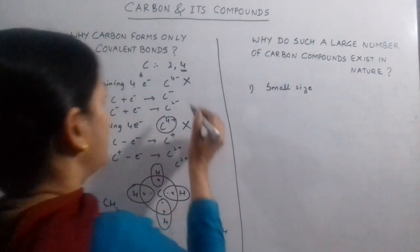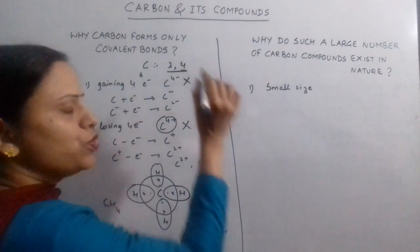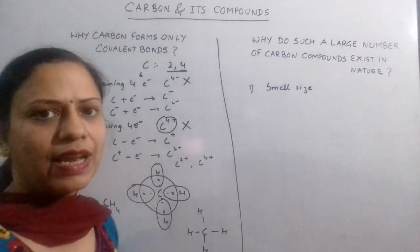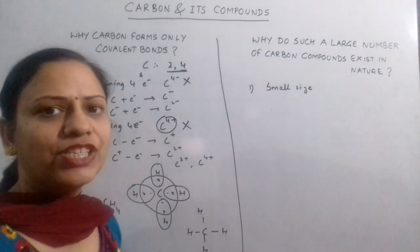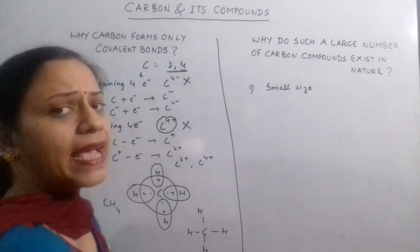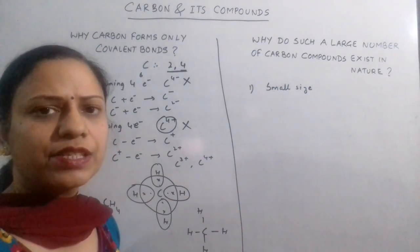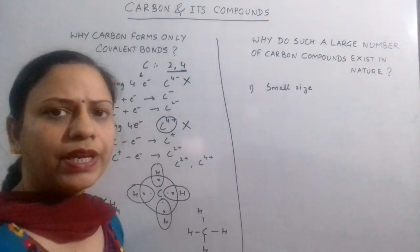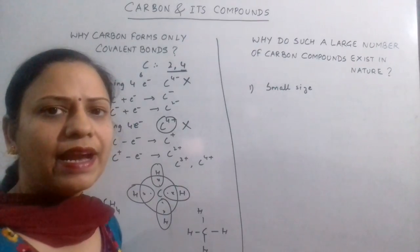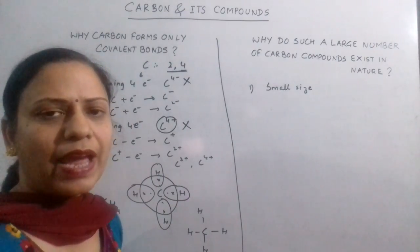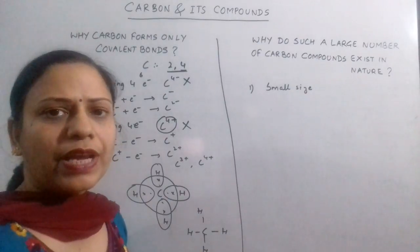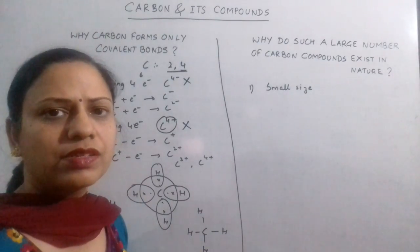Since in carbon only 2 shells are involved - the K shell and the L shell - the size of carbon atom is very small. So whichever bond it forms, the electrons are held very near the nucleus and the force of attraction of the nucleus makes the bond stronger.